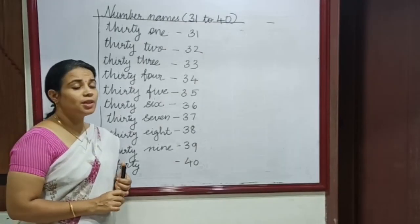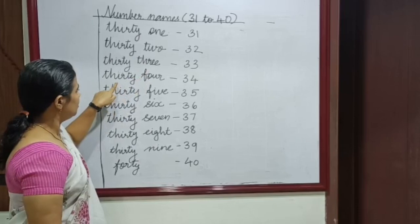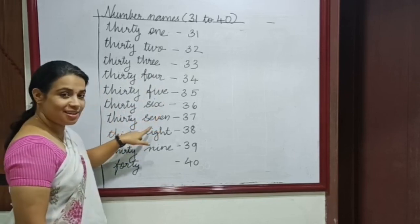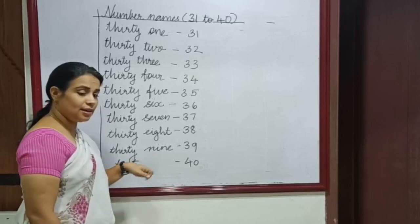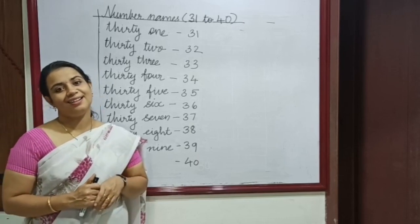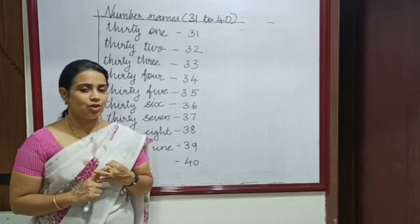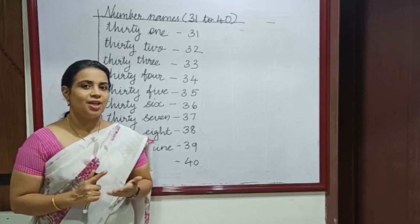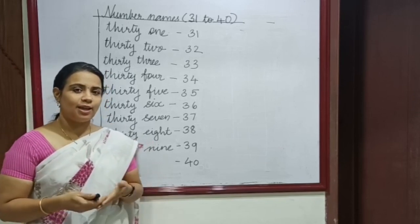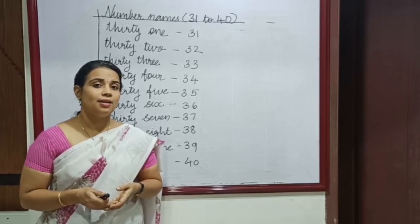Number names from 31 to 40. 31, 32, 33, 34, 35, 36, 37, 38, 39, 40. T, H, I, R, T, Y — 30. Please spell 30, follow me: T, H, I, R, T, Y — 30. 31, 32, 33, 34, 35, 36, 37, 38, 39, 40.